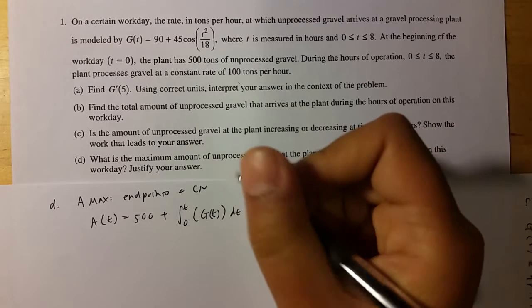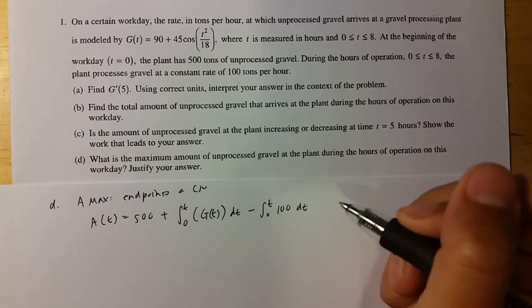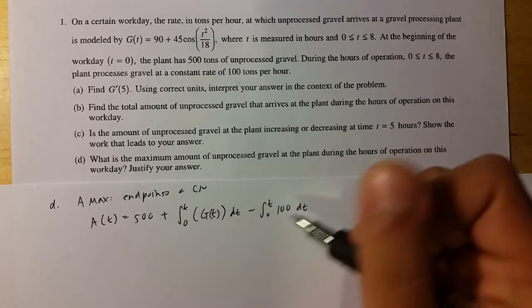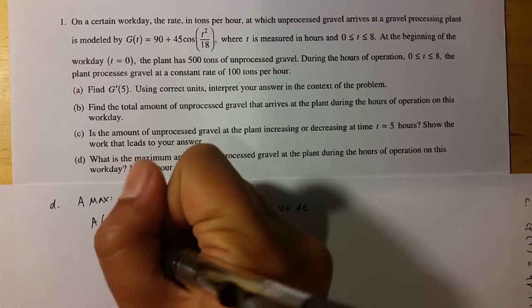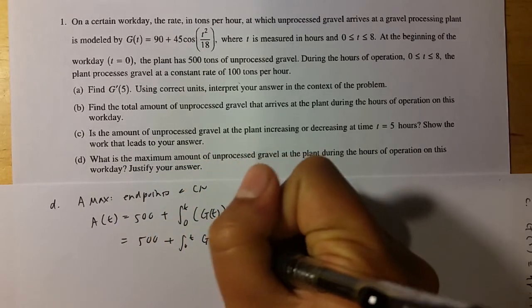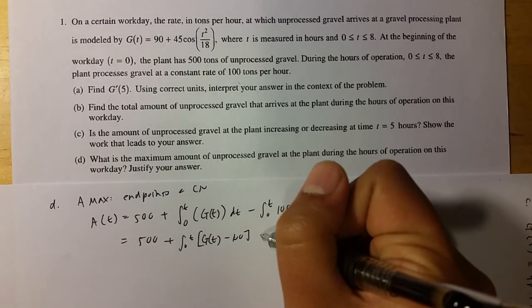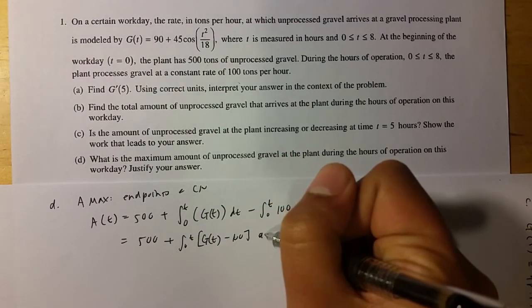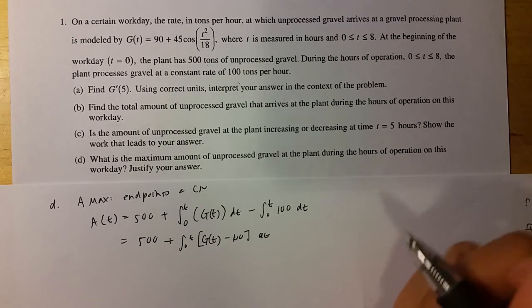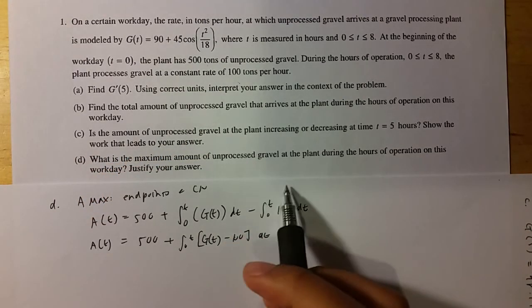But then you also have to subtract the integral of the rate at which it's leaving, which is just 100. I should call this, sorry. Actually, no, this is good. But yeah. And then you can combine these two integrals. So minus 100 DT. All right. So this is your equation for the amount of unprocessed gravel.